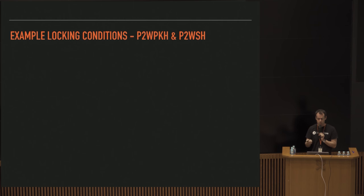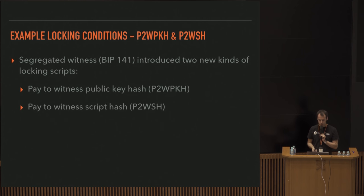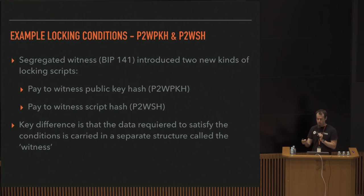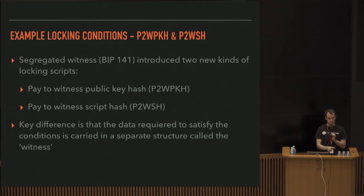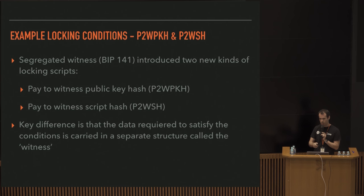New locking conditions with SegWit (BIP 141) include pay-to-witness-pubkey-hash and pay-to-witness-script-hash. These are similar to before, but the key difference is that the data required to satisfy the conditions is carried in a separate structure called the witness - that's why it's called segregated witness. The witness is not covered in the transaction ID, and that's what fixes malleability.